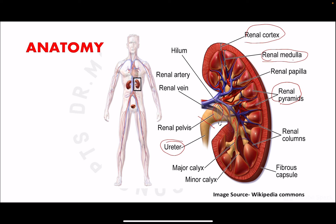The kidney is supplied by the renal artery and its branches. The renal artery enters the kidney and divides into segmental branches, then the interlobar artery, arcuate artery, interlobular artery, and finally the afferent arteriole. The afferent arteriole enters the glomerulus and forms a capillary network, which leaves as the efferent arteriole and also forms a capillary plexus around the tubules. The kidney is drained by the renal vein.